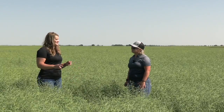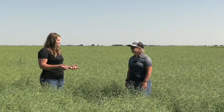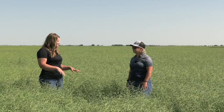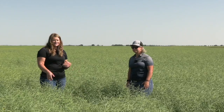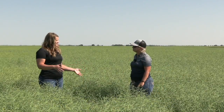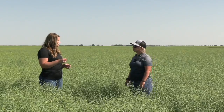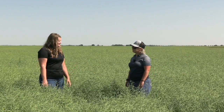We talk about it like the iceberg effect — canola might look okay above ground with some good early growth, but it really comes down to what the root system looks like. If we have adequate boron early in the season, we'll generally see a much more extensive root system, which helps with better nutrient uptake and moisture later in the season. Above ground, boron plays a huge role in the reproductive phase — during flowering, pollen tube elongation requires boron, and it can really impact seed set at the end of the year.